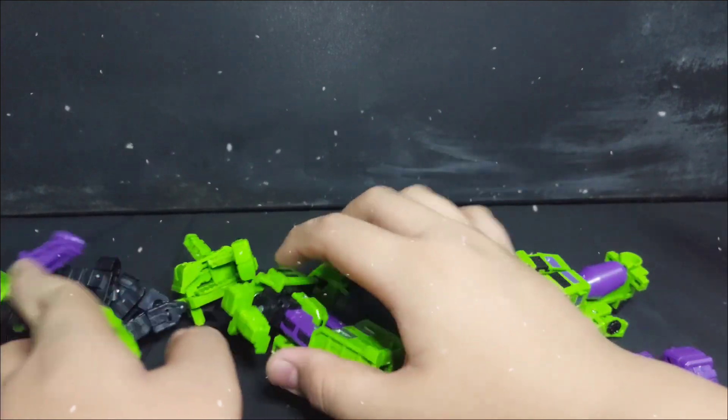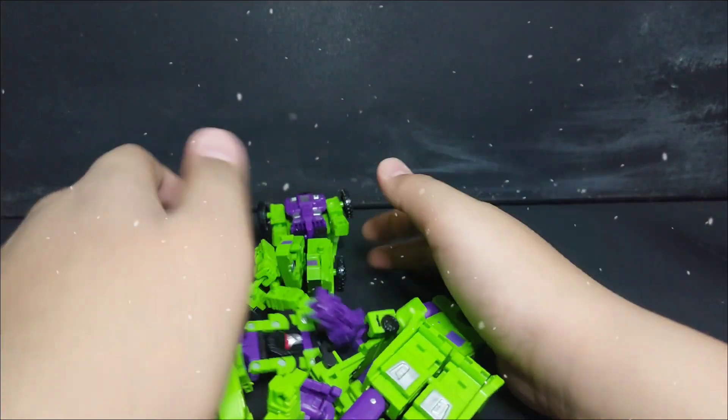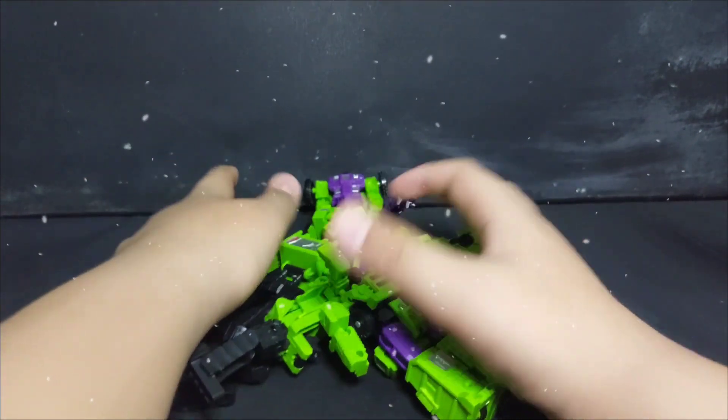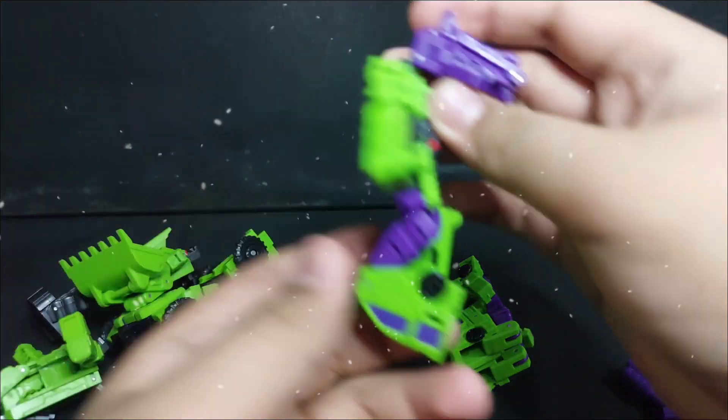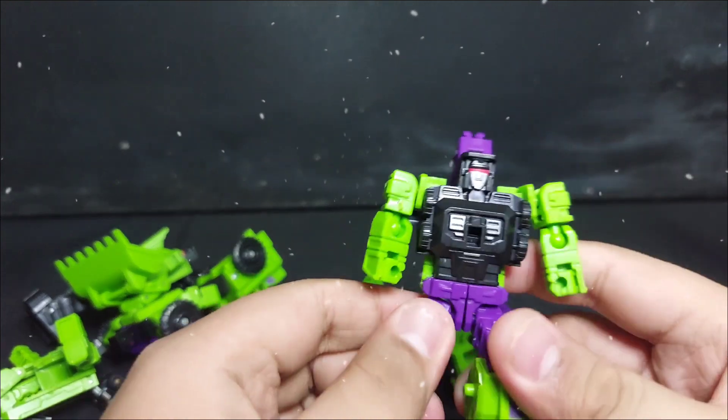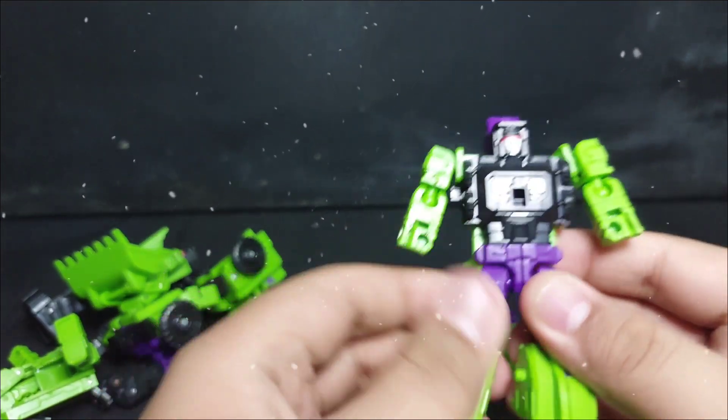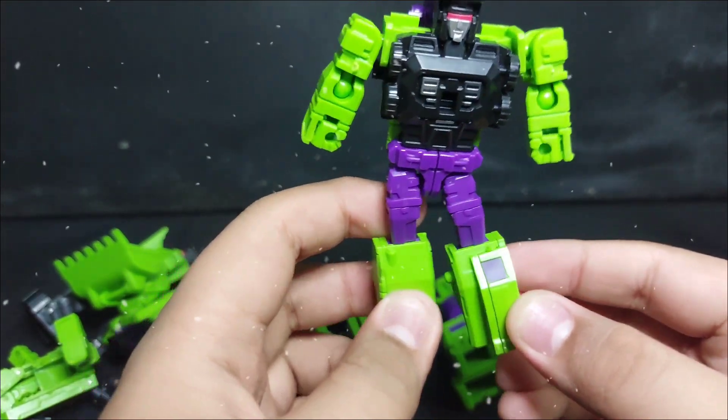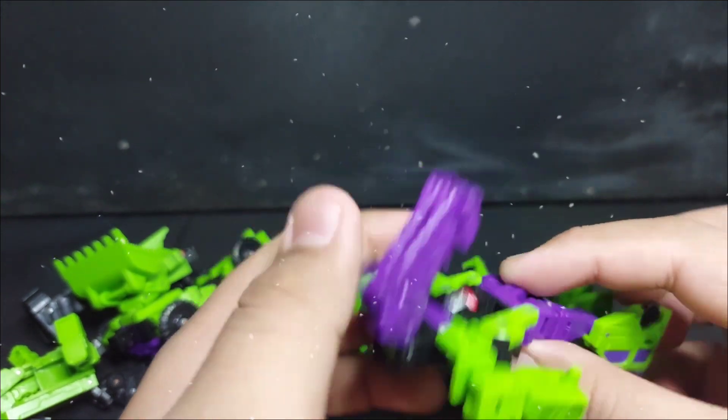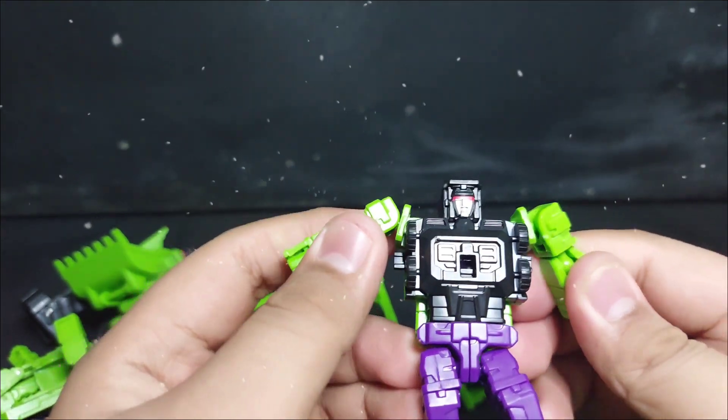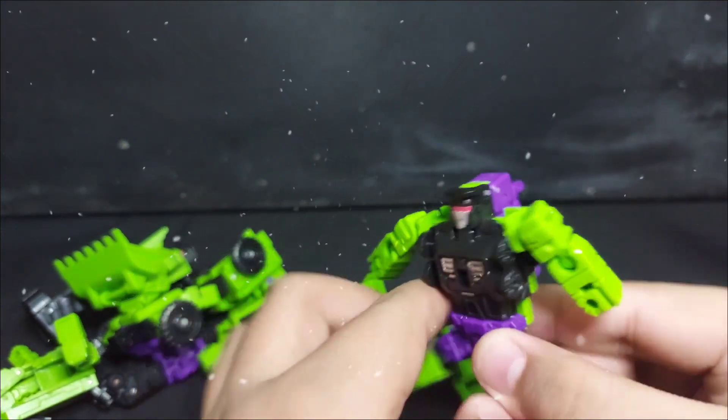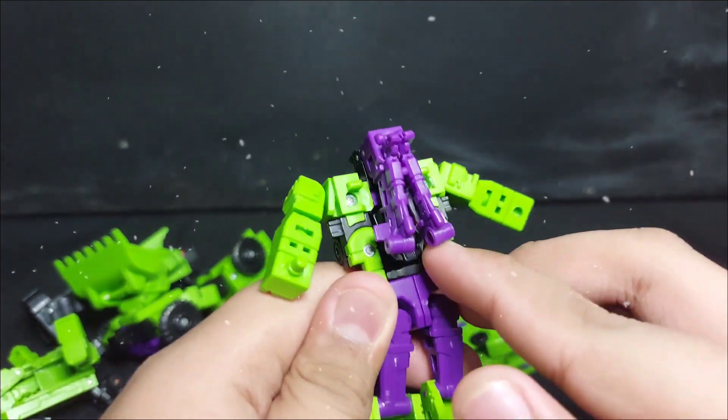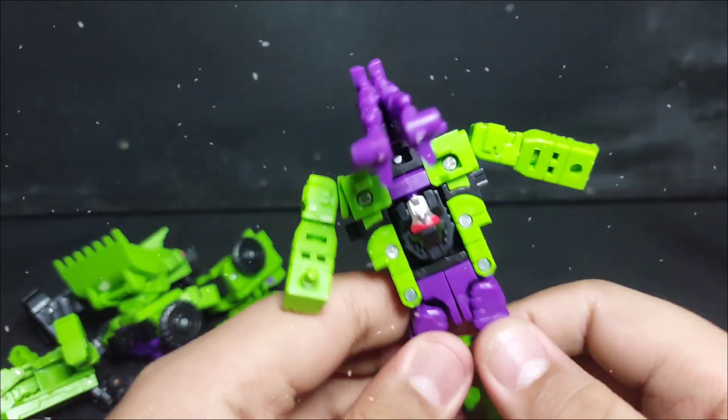Okay, let's start with, I'm gonna jumble them all together. Let's see, okay let's start with Hook. As you see, Hook looks like this. Hook doesn't look great, this is a small figure, almost Legends class I'm not sure. And if you look at his back, you just see Devastator's face.